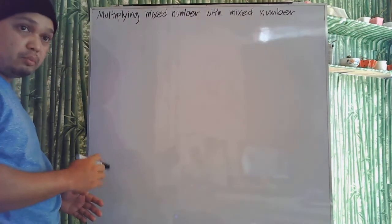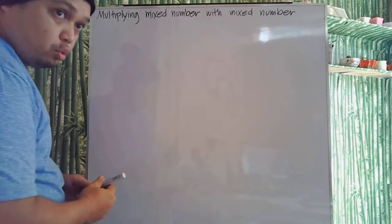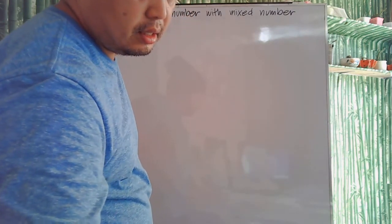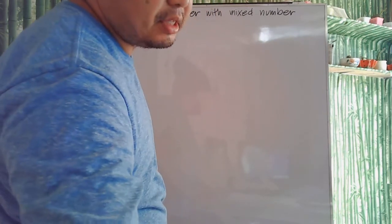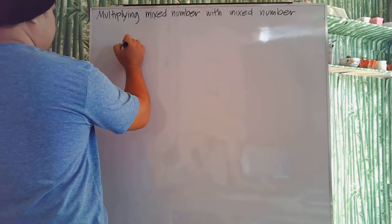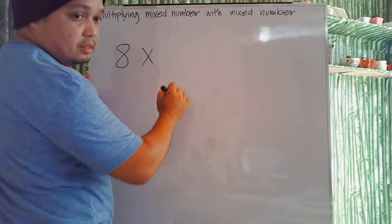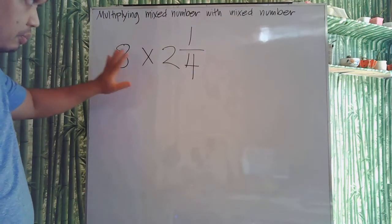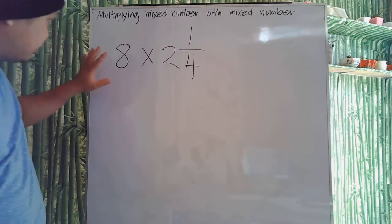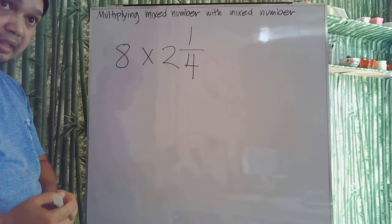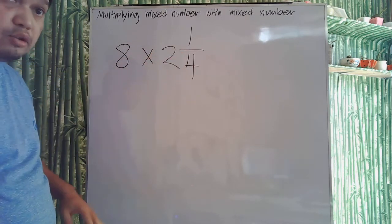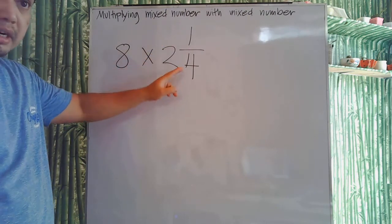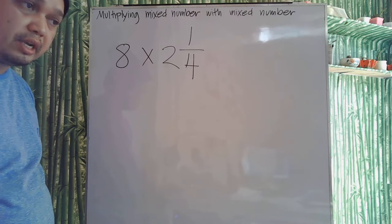Let's start first with a whole number multiplied by a mixed number, just to show you how to multiply. So we have here 8 times 2 and 1 fourth. To do this, we simply change the mixed number into an improper fraction.